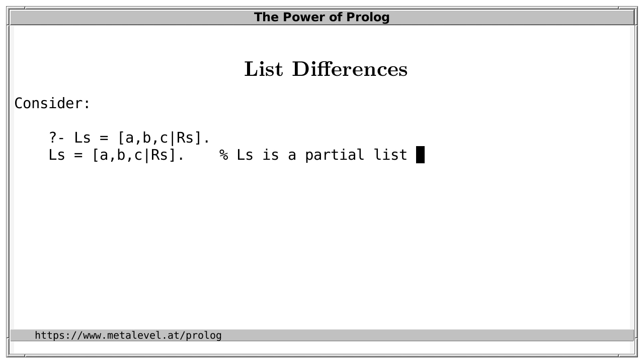It's not a list because the tail isn't a list, but it is a term that can still become a list if RS is instantiated to a list. It's one of the defining characteristics of logic programming languages like Prolog that we can reason about such partially instantiated data structures.